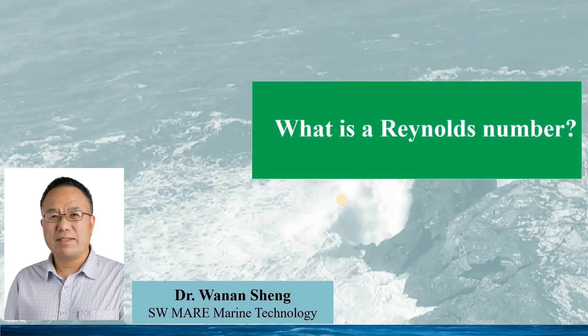Hello, welcome to my talk on what is the Reynolds number. This seems not a real question, since we have used Reynolds number everywhere in viscous flows, and we all know that when Reynolds number is large, the corresponding flows would be turbulent, as we have seen in most practical flows. But what is the physical meaning of Reynolds number, and how was the Reynolds number proposed? In this talk, I will answer these questions.